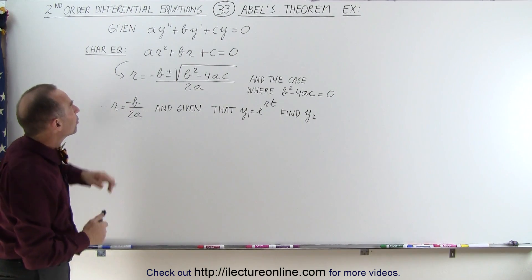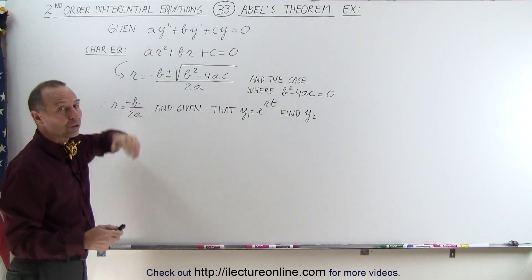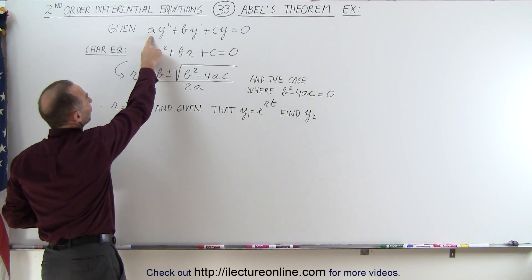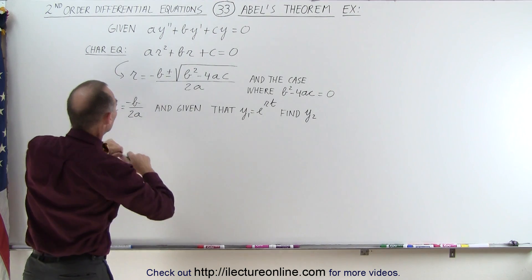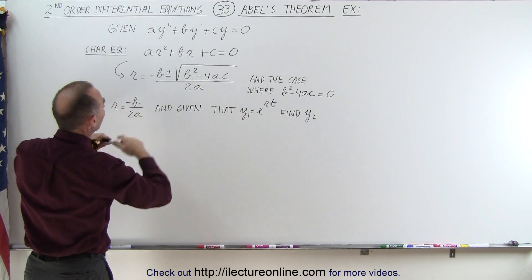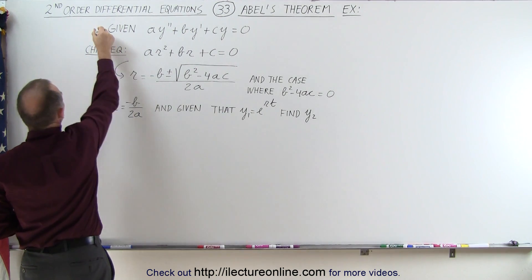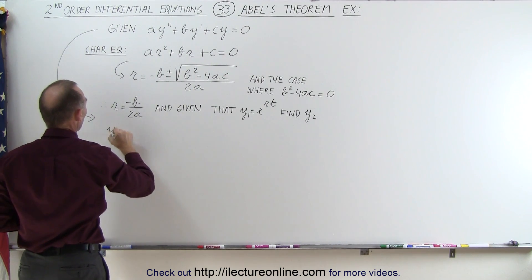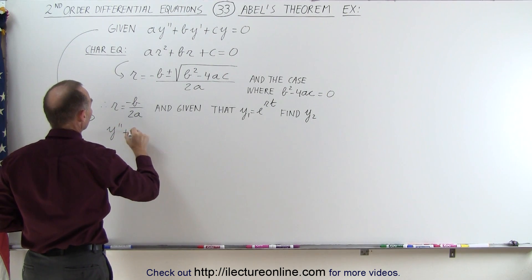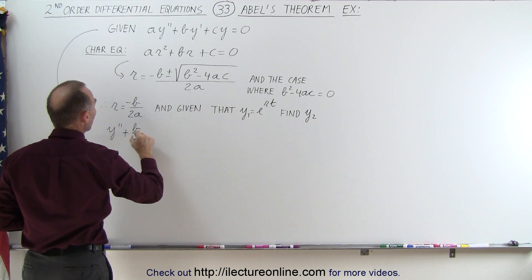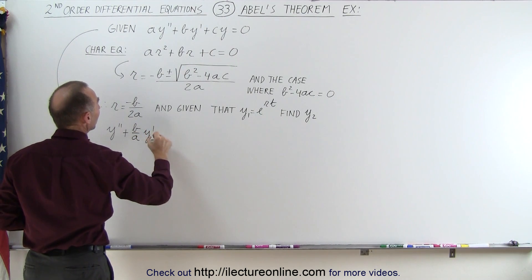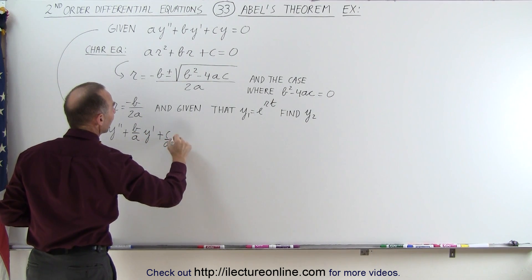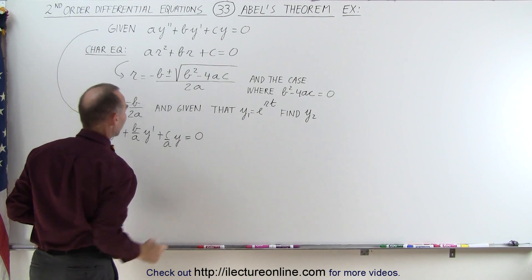The first thing we need to do is take this equation and write it into the general form where there is no coefficient in front of the y double prime term. So we divide everything by a, and we get: y double prime plus b over a times y prime plus c over a times y is equal to zero.